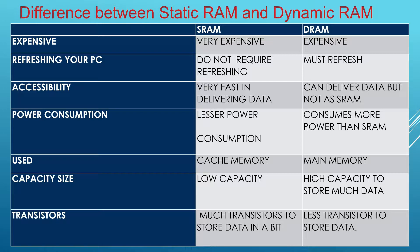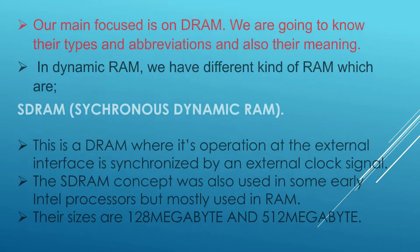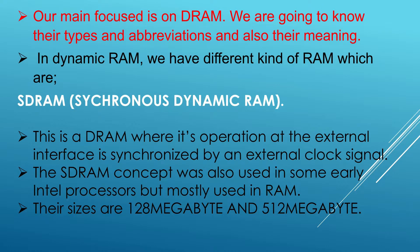Static RAM is used as cache memory, while dynamic RAM is used as main memory. In terms of capacity, static RAM has low capacity, while dynamic RAM has high capacity to store much data. Static RAM requires more transistors to store data per bit, whereas dynamic RAM requires fewer transistors. Our main focus is on dynamic RAM — we are going to know the types, abbreviations, and their meanings.